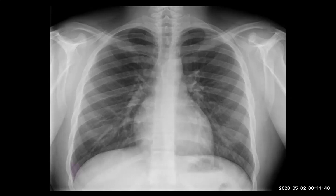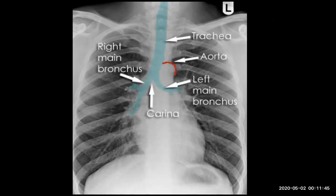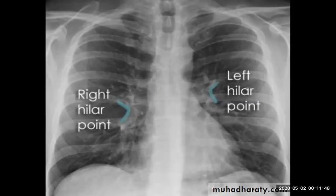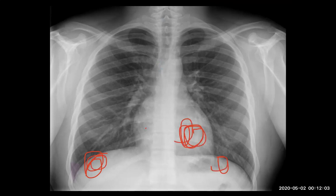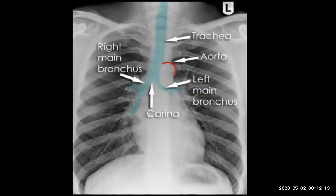F is for lung fields — to assess both lung fields for any interstitial lung disease, metastasis, or mass lesion. These are important to assess systematically. We also must not forget the hidden areas: the retrocardiac region and below or around the diaphragm. These are hidden areas we have to check again when we finish our checklist.